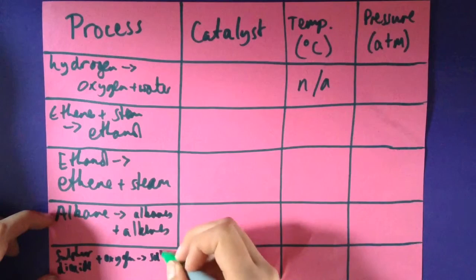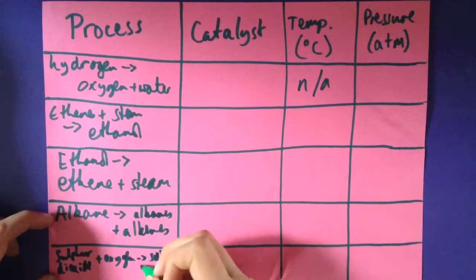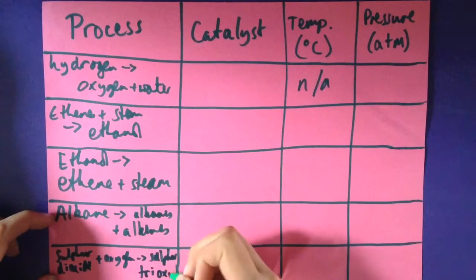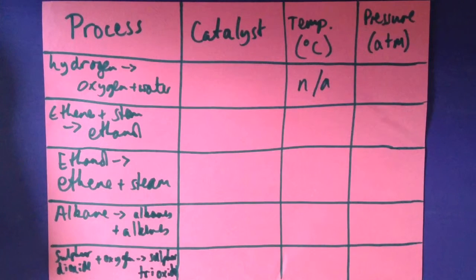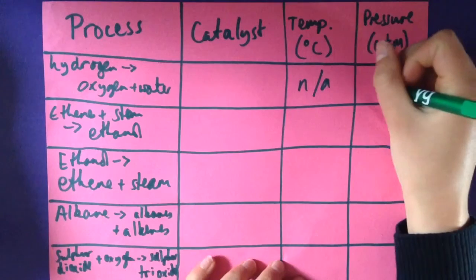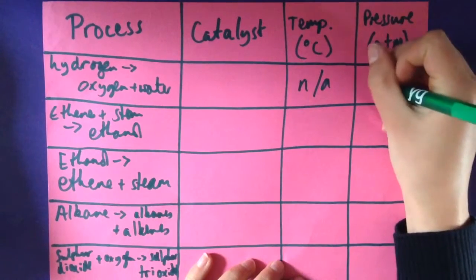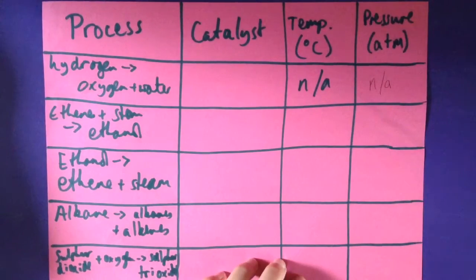And sulfur dioxide and oxygen combining to make sulfur trioxide. Going to change pens before this gets drastic. So the things we don't need to know: we don't need to know the temperature or the pressure for hydrogen peroxide because it's basically just carried out at room temperature.